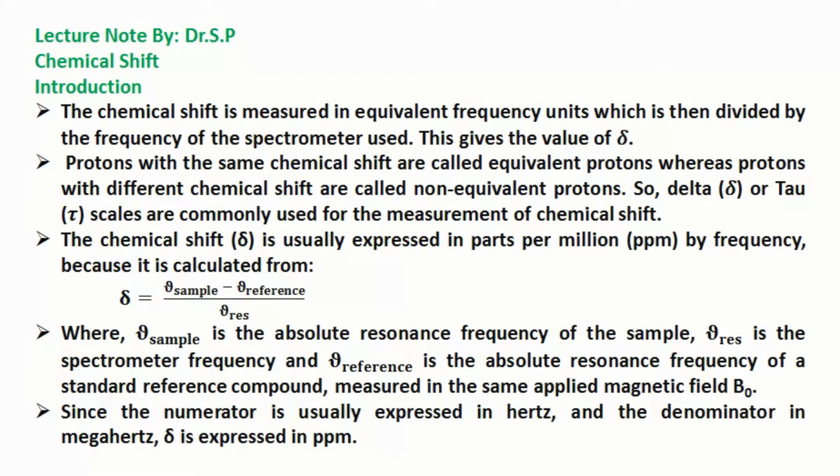The chemical shift is measured in equivalent frequency units which is then divided by the frequency of the spectrometer used. This gives the value of delta. Protons with the same chemical shift are called equivalent protons whereas protons with different chemical shift are called non-equivalent protons. So, delta or tau scales are commonly used for the measurement of chemical shift.